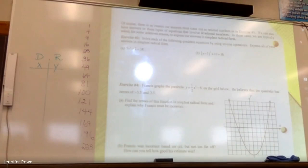Of course, there is no reason our answers must come as rational numbers. We can also have answers to the types of equations that involve irrational numbers. In these cases, we are typically asked for some unknown reason to express our answer in simplest radical form. Solve each of the following quadratic functions by using the inverse operations. Express all of your answers in simplest radical form. When they say that to you, that should be going off in your head. Oh yeah, okay, they're not going to say simplest radical form if there's going to be no radicals, no square roots.